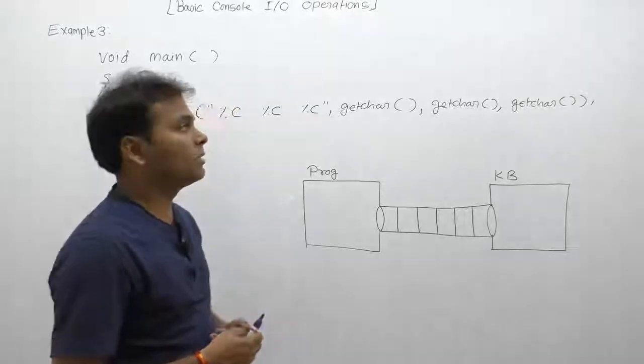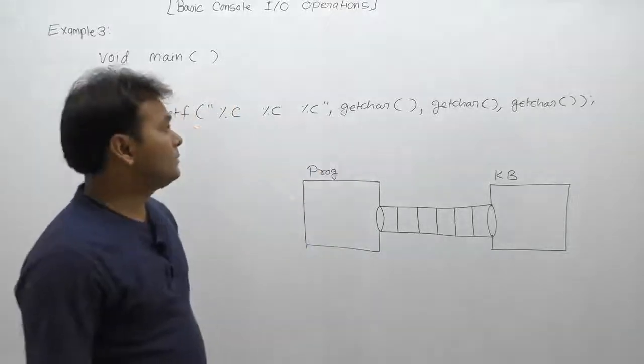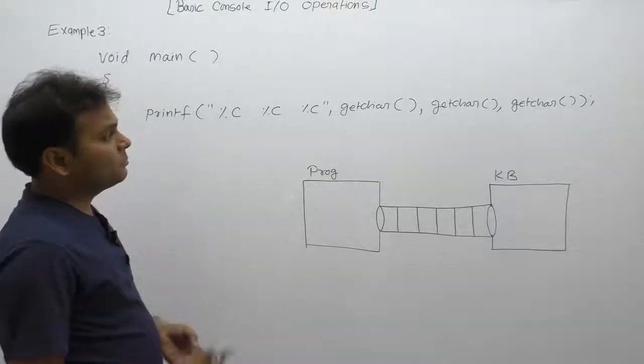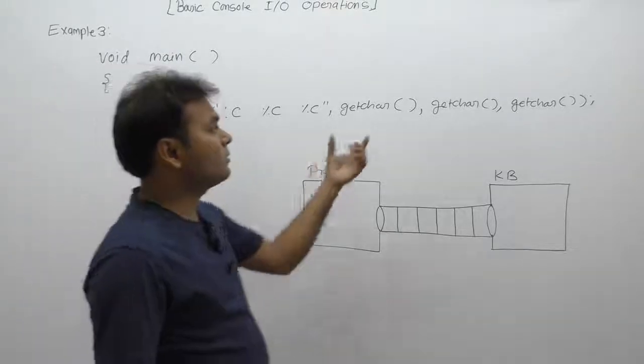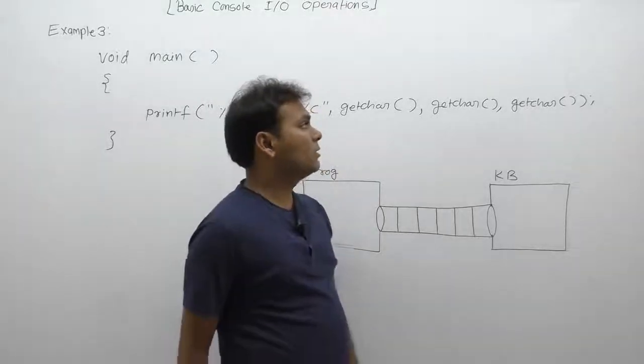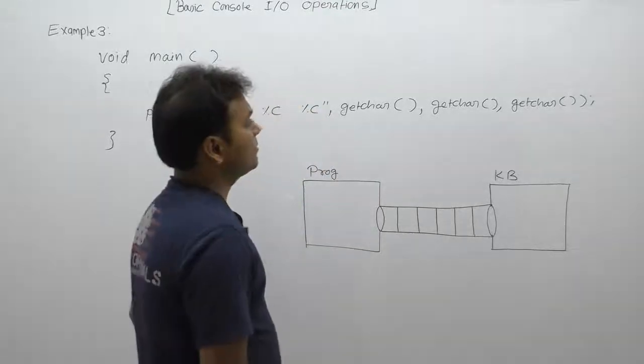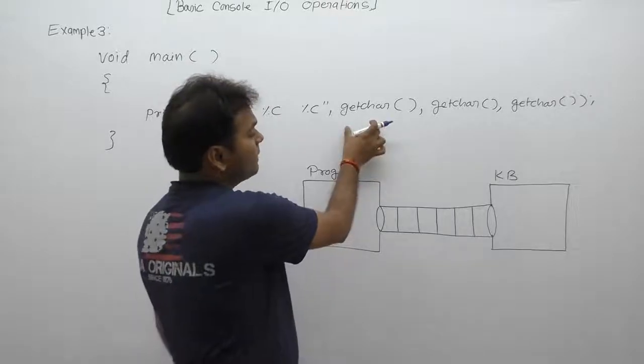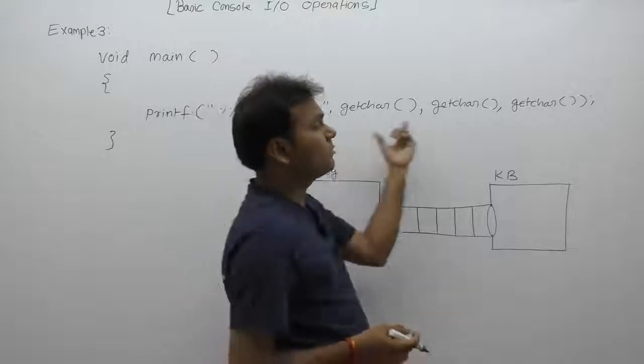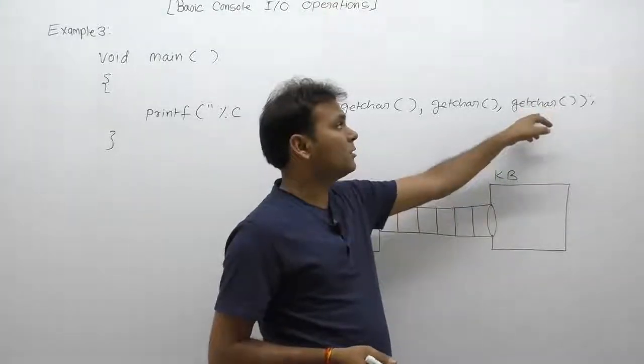As we know, in case of printf function, if multiple arguments are supplied, their execution happens from right to left direction. If any expression is supplied inside printf, it will be processed from right to left - rightmost, then that, then that.